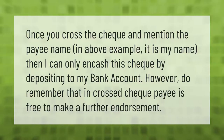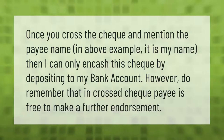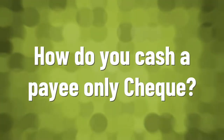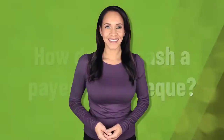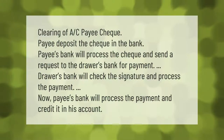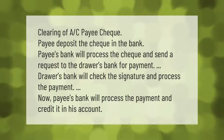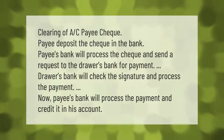Once you cross the check and mention the payee name — in the above example it is my name — then I can only encash this check by depositing it to my bank account. However, do remember that an uncrossed check payee is free to make a further endorsement. For an A/C payee check, the payee deposits the check in the bank. The payee's bank will process the check and send a request to the drawer's bank for payment. The drawer's bank will check the signature and process the payment, and the payee's bank will then credit it in the payee's account.